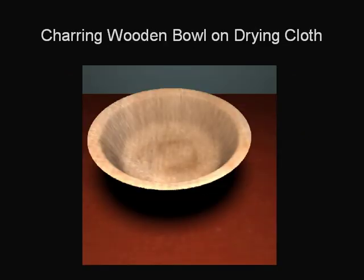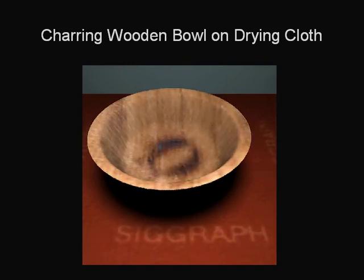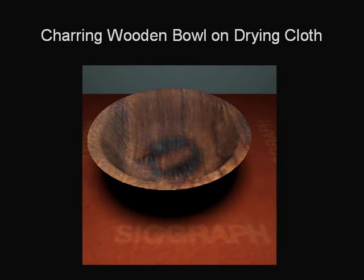In this example, with a burning wooden bowl and drying orange cloth, we use rate maps to create the appearance of the SIGGRAPH logo, which fades in and then fades out over time as the burning and drying are complete.